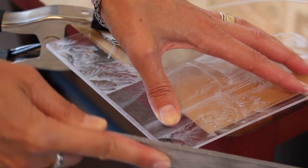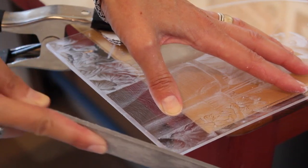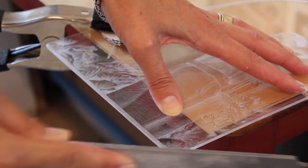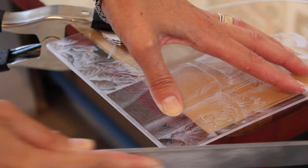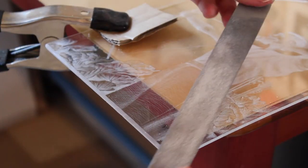Now I'm rounding the corners of the plate here which you can skip. I like to take the sharp corners off because you handle the plate a lot for inking, printing and cleaning. I also like the way the rounded corners look on the plate impression left on the paper.